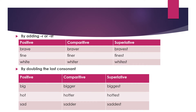By doubling the last consonant: if the spelling is 'big,' we do not write 'b-i-g-e-r'; it becomes 'b-i-g-g-e-r' — bigger — and 'b-i-g-g-e-s-t' — biggest. Similarly: hot, hotter, hottest; sad, sadder, saddest.